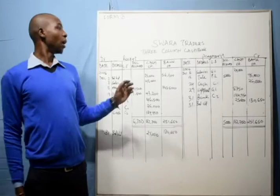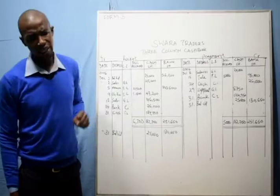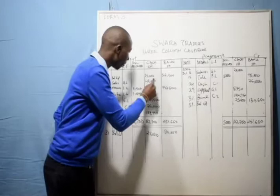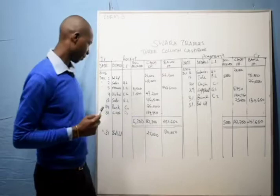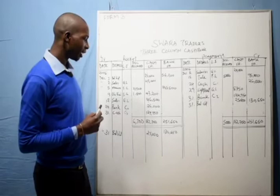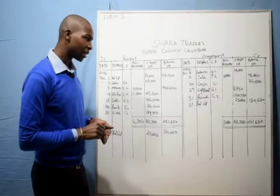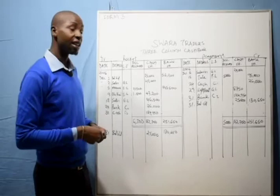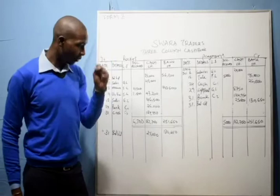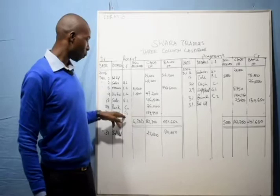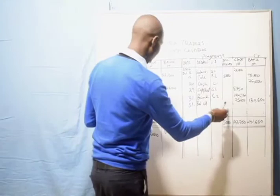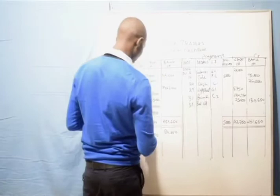On 31st, we banked all cash except 25,000. We need to calculate all the money we have in cash on the receipts side — adding 25,000, 42,000, 43,200, 46,500, and 26,000. Once we know the total, we find that after accounting for the retained 25,000, we are going to bank a total of 124,950. This banking entry goes on the credit side of cash.